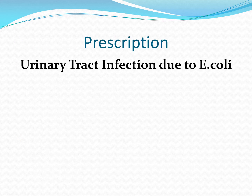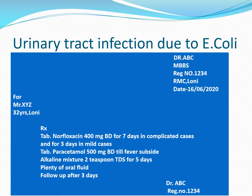Among bacteria causing UTI infection, E. coli is considered the most predominant cause of both community-acquired and nosocomial UTI infections. For urinary tract infection due to E. coli, we give tablet Norfloxacin 400 mg twice daily for 7 days in complicated cases, and for mild UTI infection, Norfloxacin 400 mg twice daily for 3 days, along with tablet paracetamol 500 mg twice daily till fever subsides, alkaline mixture 2 tablespoons 3 times daily for 5 days, and plenty of oral fluid with follow-up after 3 days.